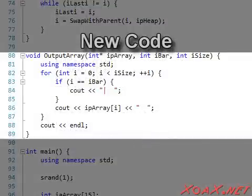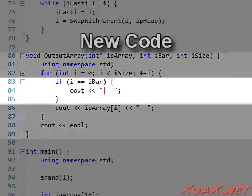Then I changed the output array function to take an extra parameter that specifies a position where we want to print a vertical bar.